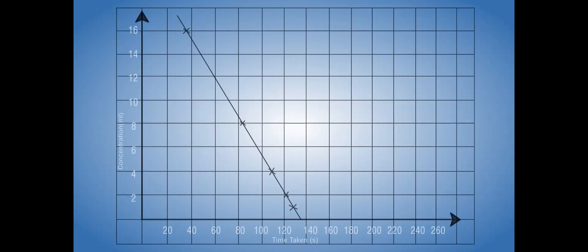Then plot a graph between the concentration of HCl on the y-axis and the time needed for the mark to disappear on the x-axis.